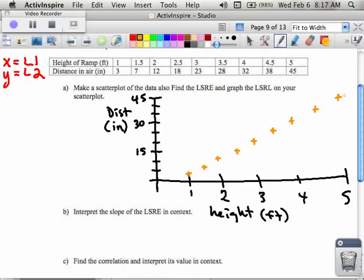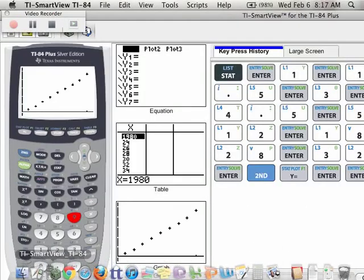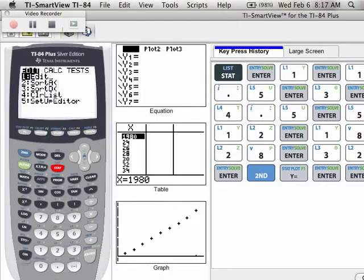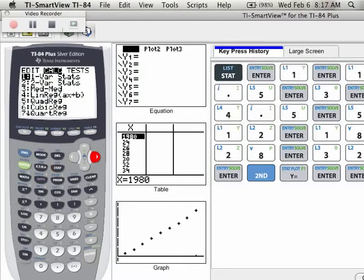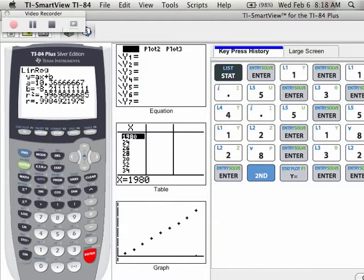So this is my scatter plot and then we're supposed to do the least square regression line. I'm going to show you how I would find it normally and then I'm going to show you how you could dump that into your y equals. I go back to my calculator and I go stat, calc, number four which is the linear regression line, enter.